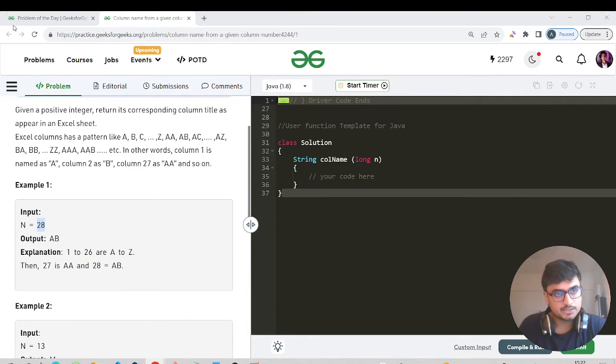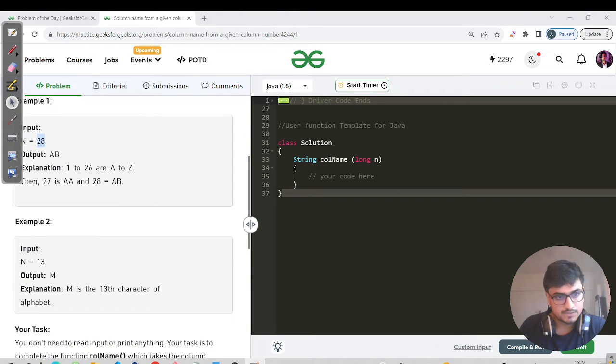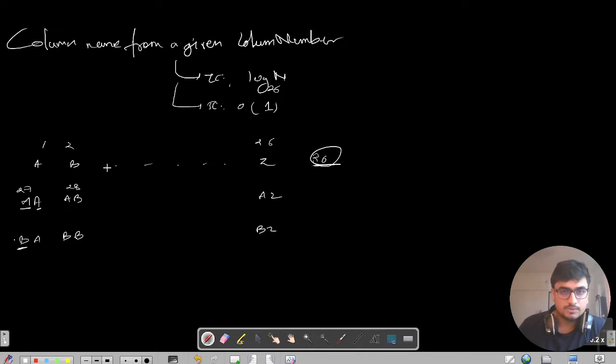For 28, we need to return AB. Till A to Z there are 26 columns, then this will be 27, this will be 28, so that's why it's AB. Similarly, for 13 we need to return M. That's a single character, so it's 13, right?